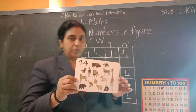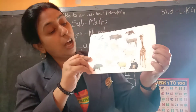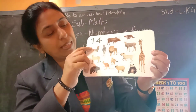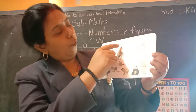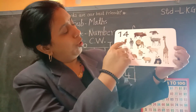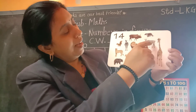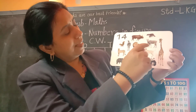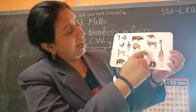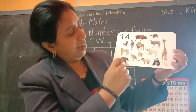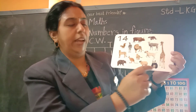Look here. Look at these pictures. How many animals are there? Let's count: 1, 2, 3, 4, 5, 6, 7, 8, 9, 10, 11, 12, 13, and 14.